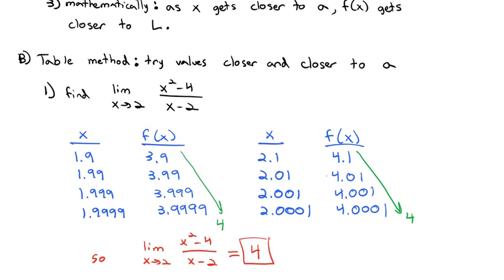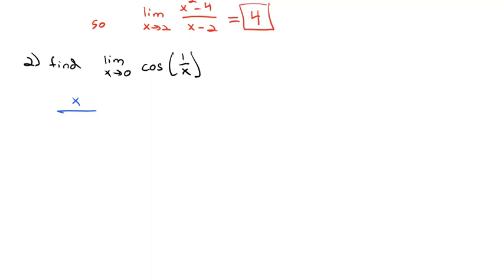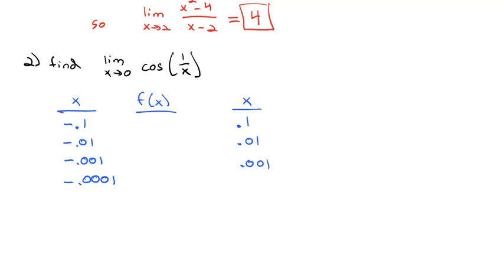Let's try another example. The table method is really nice when it works, but it doesn't always work as beautifully as we'd hope. We're going to find the limit as x approaches 0 of cosine of 1 over x. Again, we'll take x values a little smaller than 0: negative 0.1, negative 0.01, negative 0.001, negative 0.0001. And then values just to the right of 0: 0.1, 0.01, 0.001, and 0.0001.